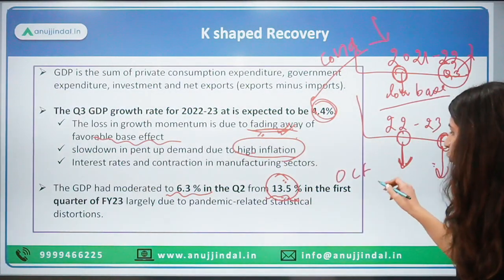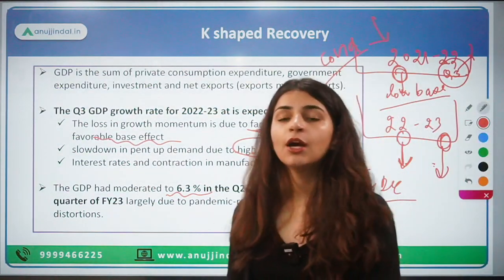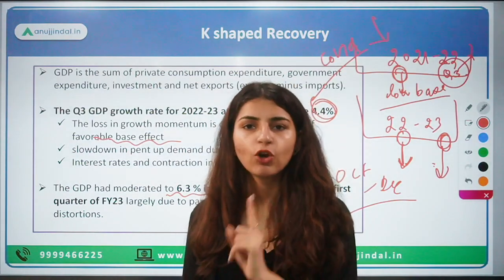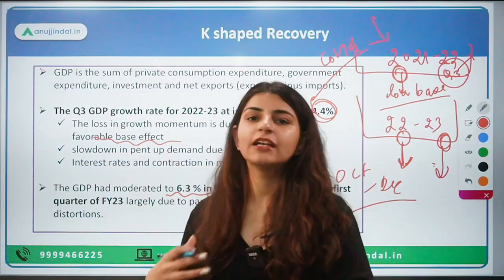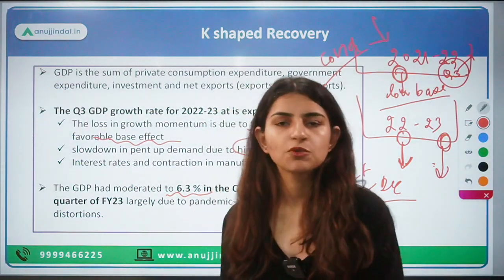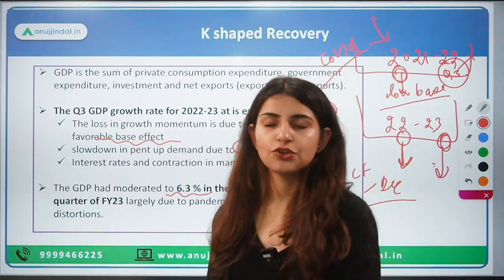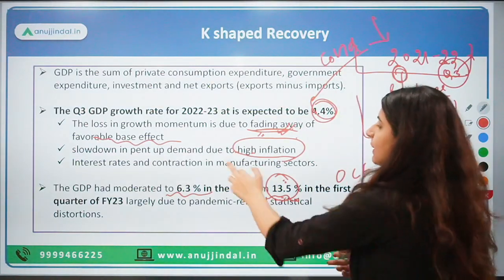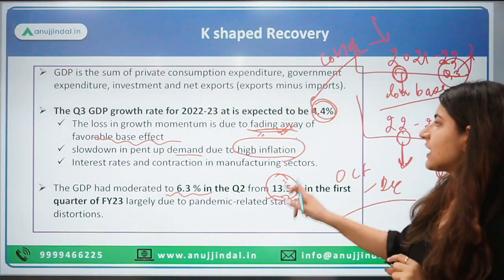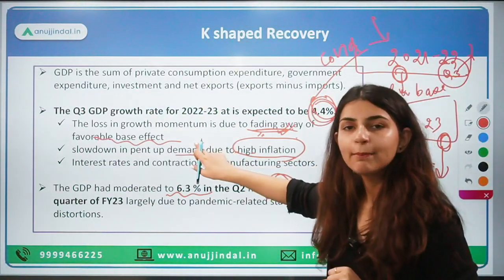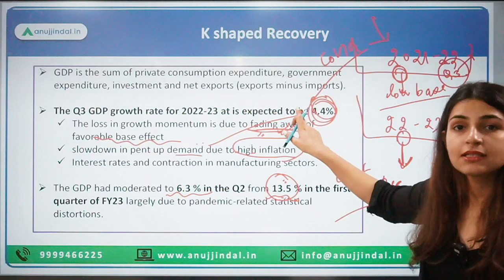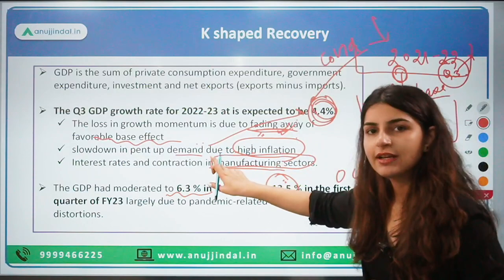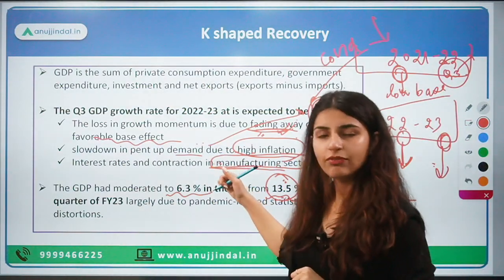The second reason is inflation. From October to December, inflation was very high, which is why the RBI followed a hawkish or tightening monetary policy stance, causing repo rates to rise. The main objective of the RBI was to control demand, so when demand slows down, we cannot expect high growth. The third reason given is a contraction in the manufacturing sector.